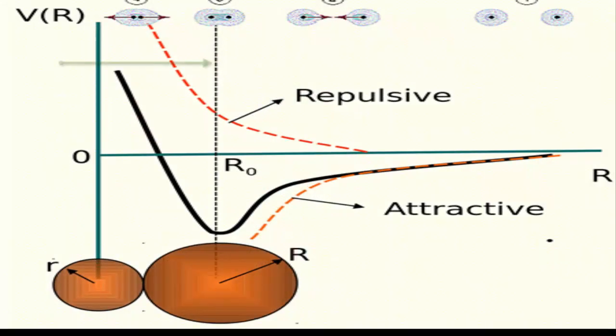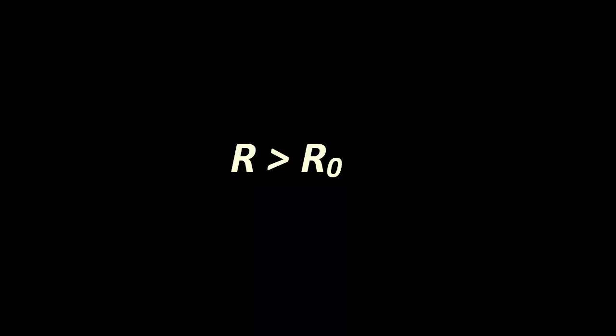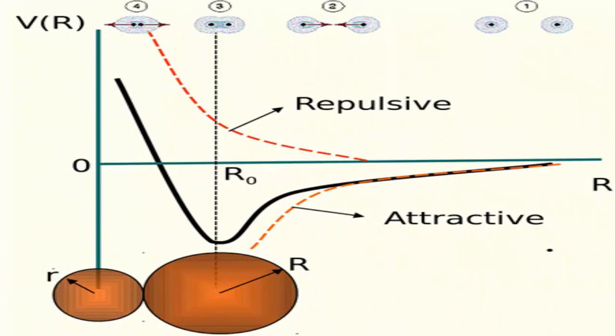This typical energy curve has a minimum at equilibrium distance R0. Now we discuss the conditions or types of the curve. If the distance R is greater than the distance R0, the potential increases gradually, approaching zero as R approaches infinity. The force is attractive.